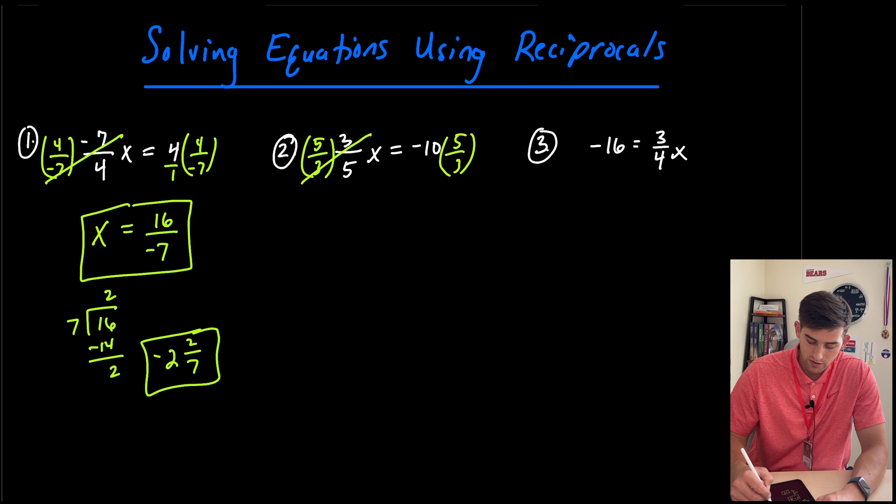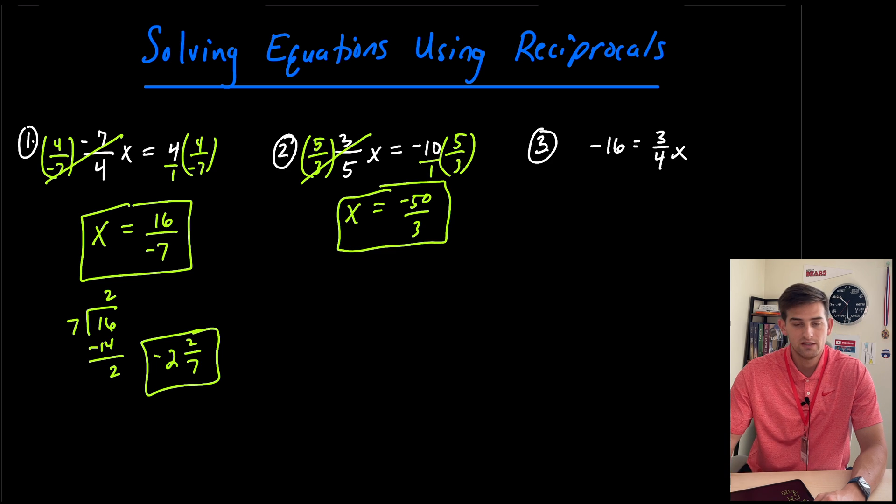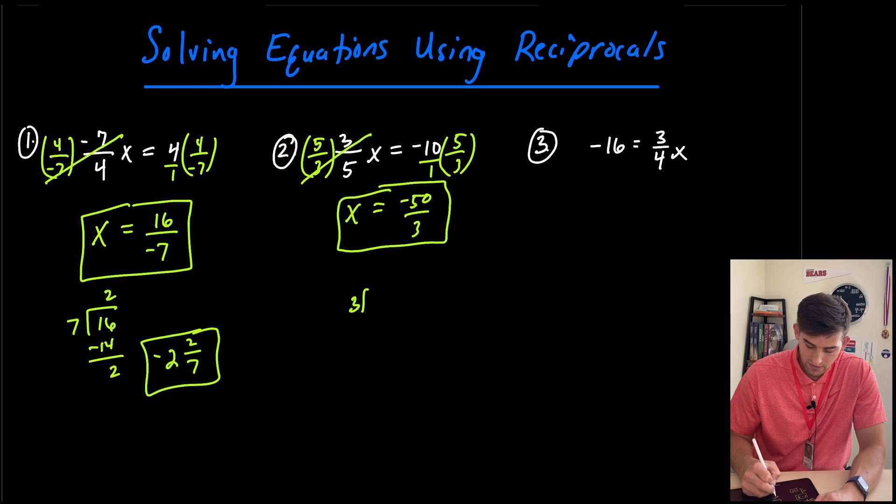So now those would equal one, so we get x is equal to negative 10 times five would be negative 50, and one times three is three. So once again, we could leave that as an improper fraction, or we could divide to get our mixed number.